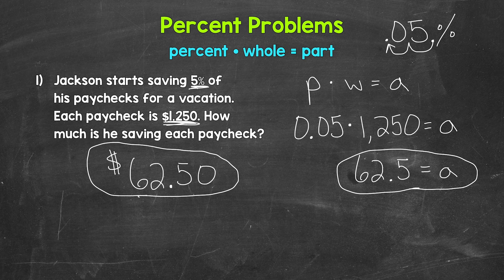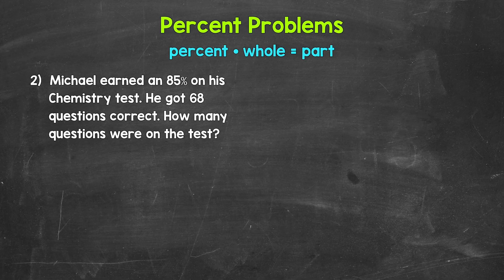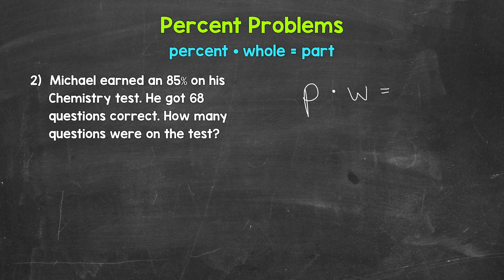Let's move on to number two. We have: Michael earned an 85% on his chemistry test. He got 68 questions correct. How many questions were on the test? Let's come to the side and work through this. Our equation: P for percent times W for the whole equals A for the part. Now we need to identify the different parts of the equation and plug in. We have 85%, so let's plug that in.